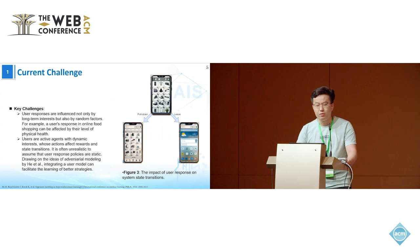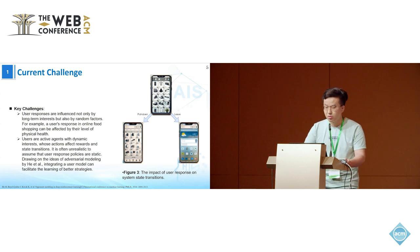Furthermore, users are active agents with dynamic interests, whose actions affect rewards and state transitions. It is often unrealistic to assume that user response policies are static. Figure 3 demonstrates the impact of different user responses on system state transitions when using an online shopping app. Scrolling down causes the system to display new products, while leaving the app returns a user to the phone's home screen.